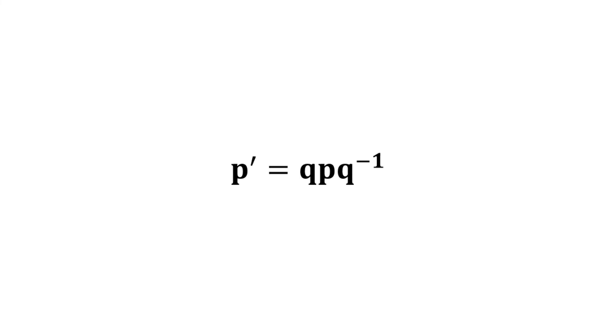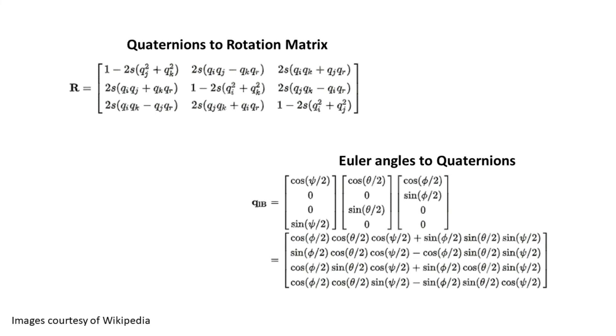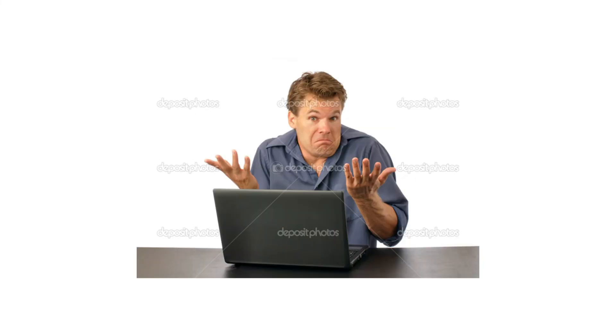Anyways, by actually carrying out this multiplication, we get our rotated vector. And to prove this works, you can actually convert quaternions to rotation matrices using all this junk, or vice versa, convert Euler angles to quaternions using all of this junk. That's a lot of math we don't have time for right now.